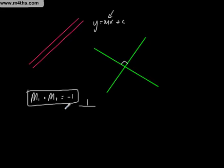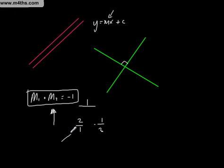I like to think of it this way: if we've got a gradient of 2, I can write that as 2 over 1. All we need to do is turn this upside down and multiply it by negative 1. So if the gradient of a tangent was 2, then the negative reciprocal — the perpendicular line — would have a gradient of minus one half.